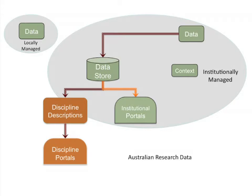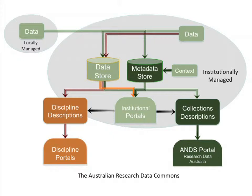So if that's the world we currently have, what's the world we're trying to move to? What we're hoping to do in ANZ is add a series of components that will get us towards those four transformations. The first of those components is a metadata store to manage that context better, which is now in the institutionally managed box — and I'm going to talk this afternoon about our goals for metadata stores. We're also adding the notion of collections descriptions, and this thing called Research Data Australia, which is a kind of ANZ portal. I've just realised this is a slightly old version of this diagram.